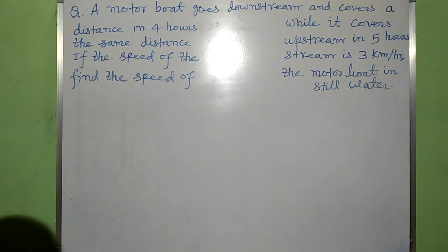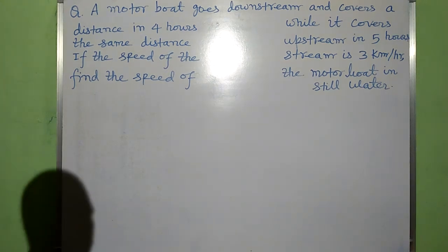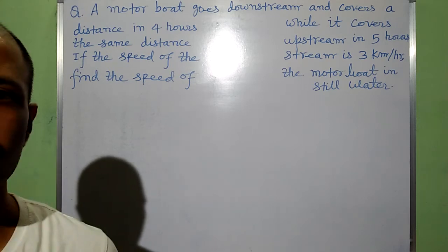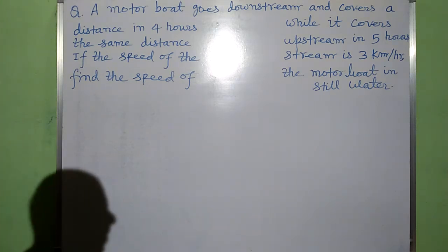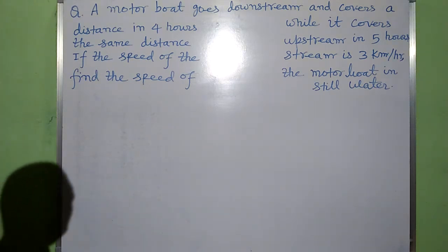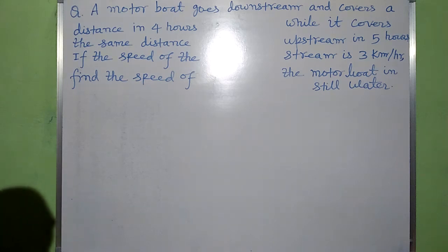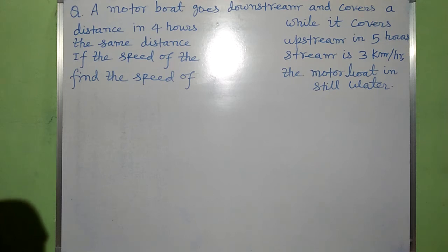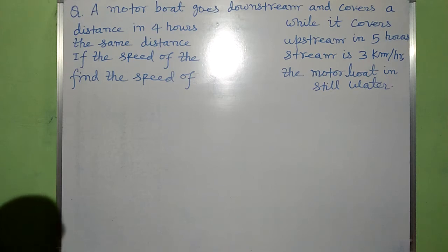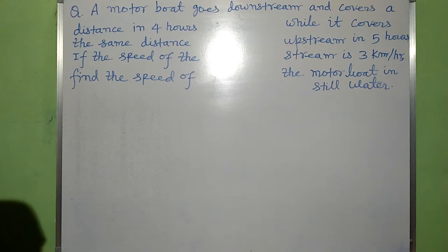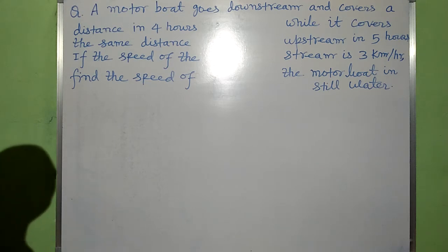Namaste everyone. Here I am going to solve one question which is related to linear equation in one variable. The question runs like this: a motorboat goes downstream and covers a distance in 4 hours, while it covers the same distance upstream in 5 hours. If the speed of the stream is 3 km per hour, find the speed of the motorboat in still water.